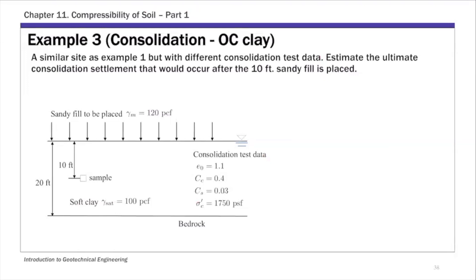Example 3 has basically the same soil profile: 20 feet of soft clay with 10 feet of sandy fill to be placed on top, pre-loading the same site. The only difference is the clay is different this time, so we have a different set of consolidation data — different slopes, different pre-consolidation pressure, and different initial void ratio.